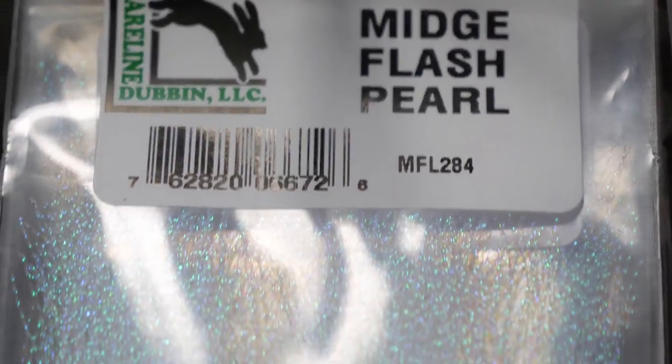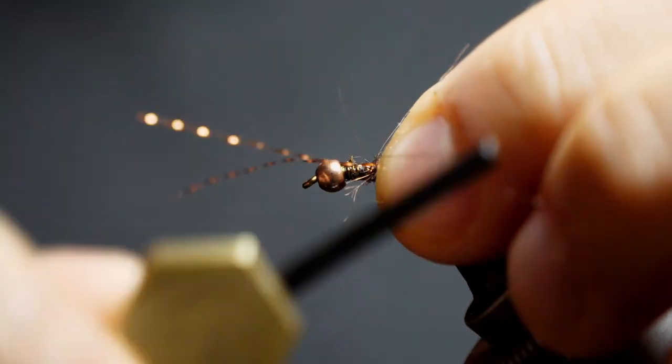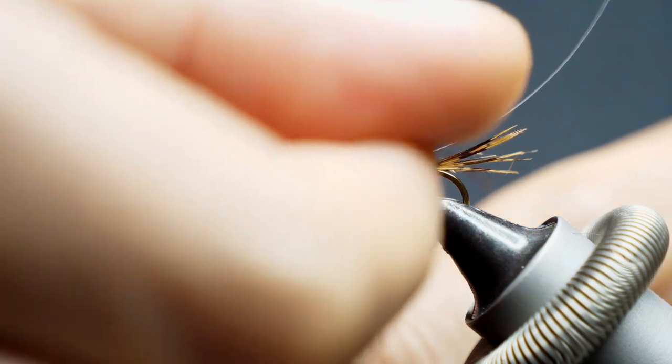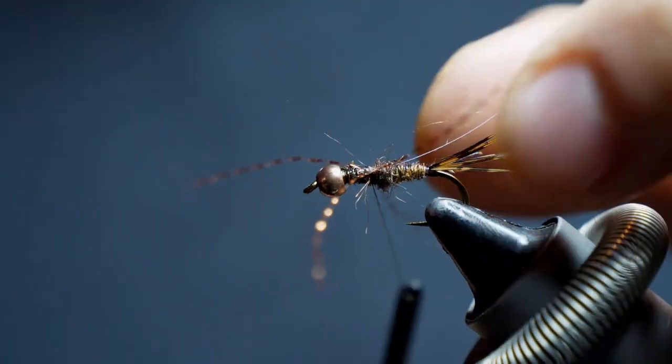So here I'm just using flashabou legs. You could use midge flash, crystal flash, anything like that. And I'm just building up my legs here, pinch wrapping those down on both sides so we get that nice X pattern.